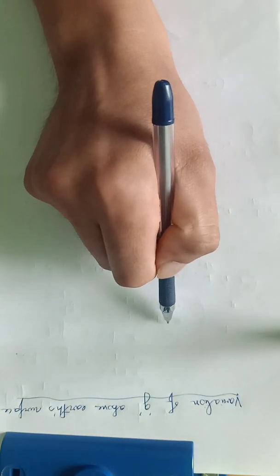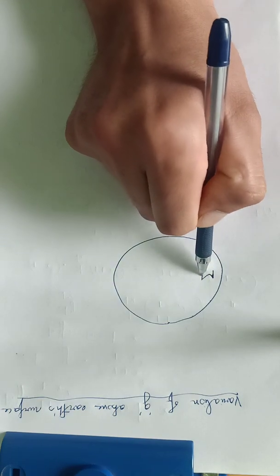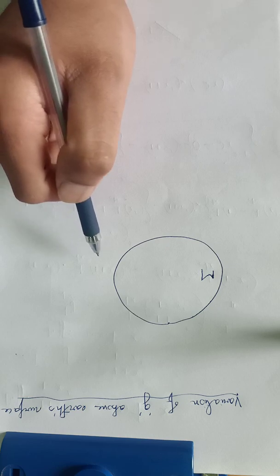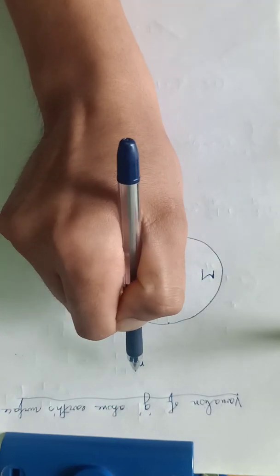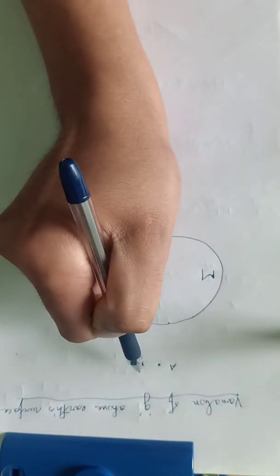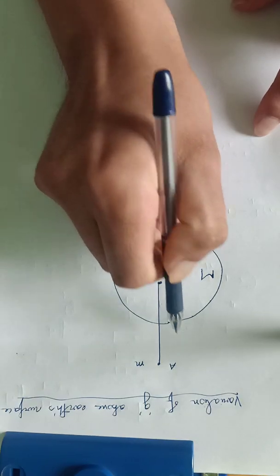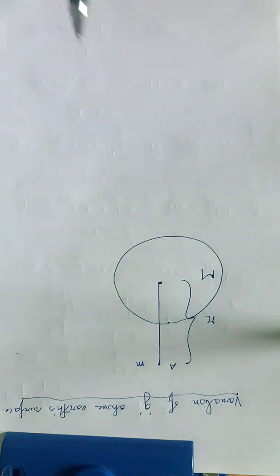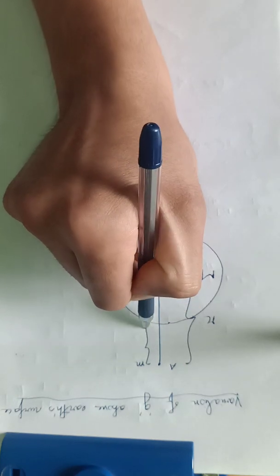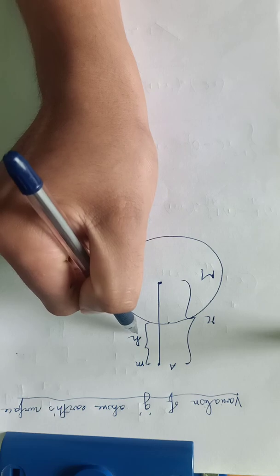Consider Earth as a uniform sphere of mass M and radius capital R. Let us consider an object of mass small m which is placed at some height above the Earth's surface, say at point A, such that the distance of this point from the center of the Earth is given by small r. In other words, the distance of point A from the surface of the Earth is given by small h — that means the object is raised to a height h above the Earth's surface.